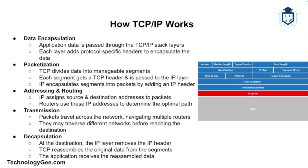Next, addressing and routing — IP addresses and routes packets to their destination based on the IP address in the packet headers, and routers in the network use those addresses to determine the best path for the packets. Then transmission — packets are transmitted over the network, potentially passing through multiple routers and networks before reaching their destination. Finally, decapsulation — at the destination the entire process is reversed: the IP layer removes the IP headers, and the TCP layer reassembles the segments into the original data, which is then passed to the appropriate application.